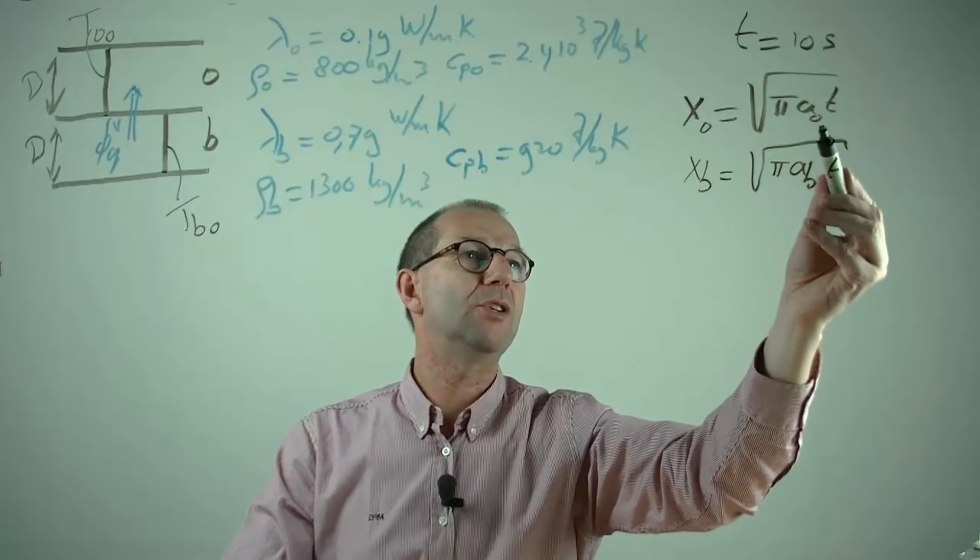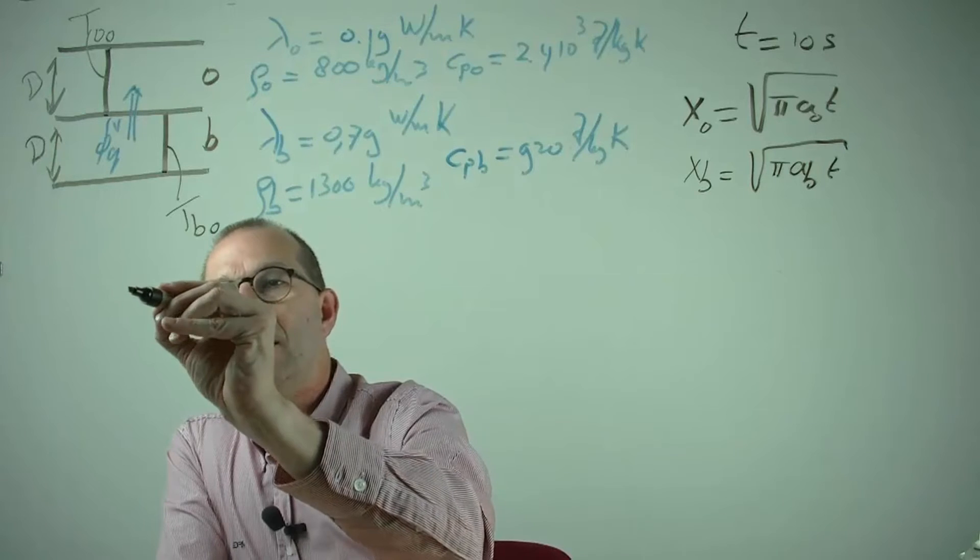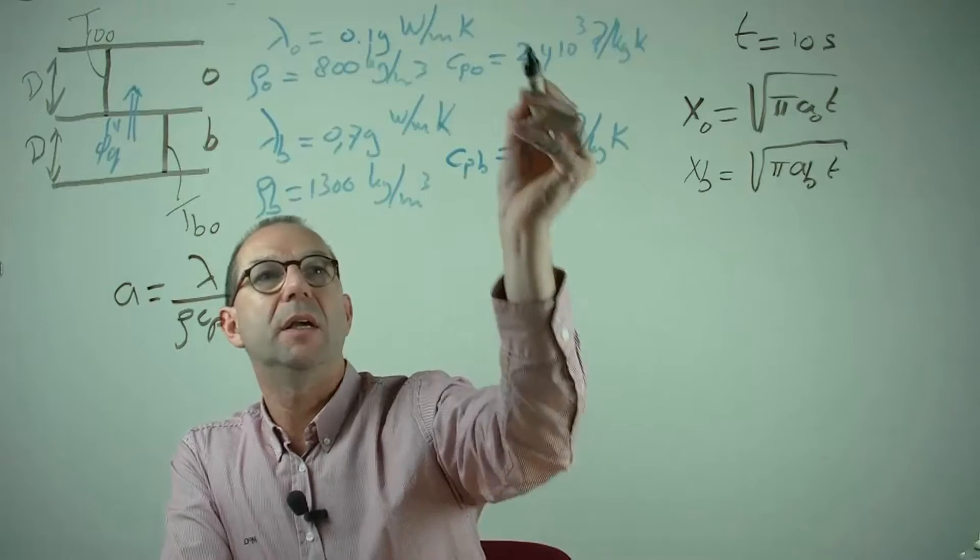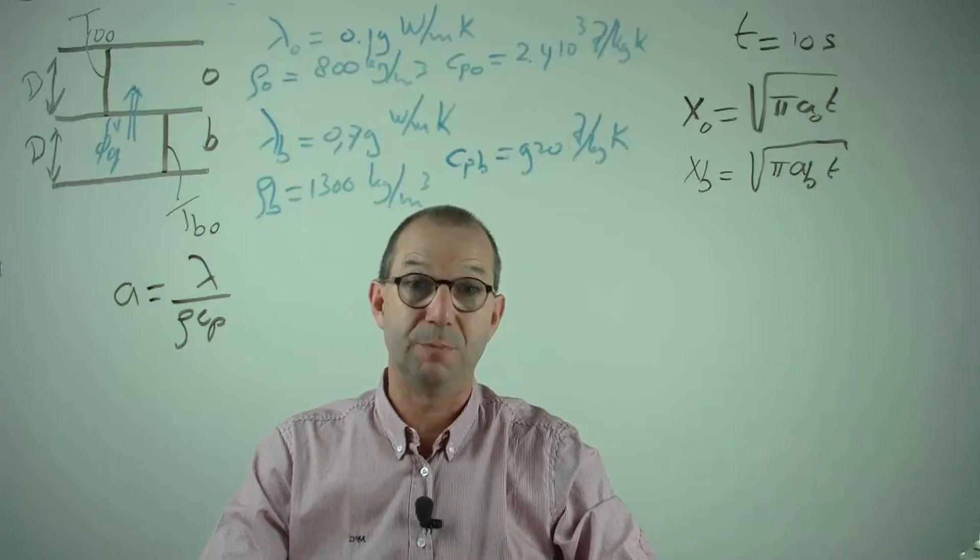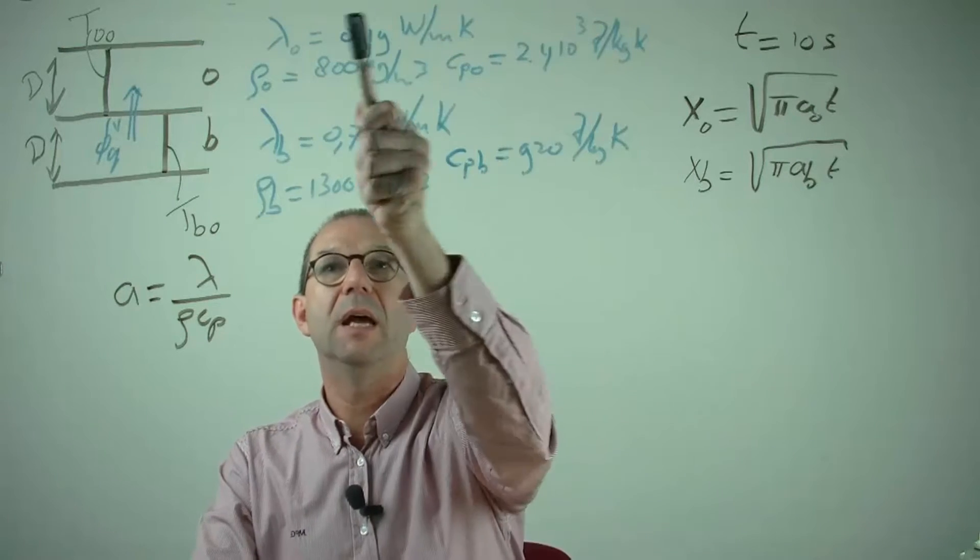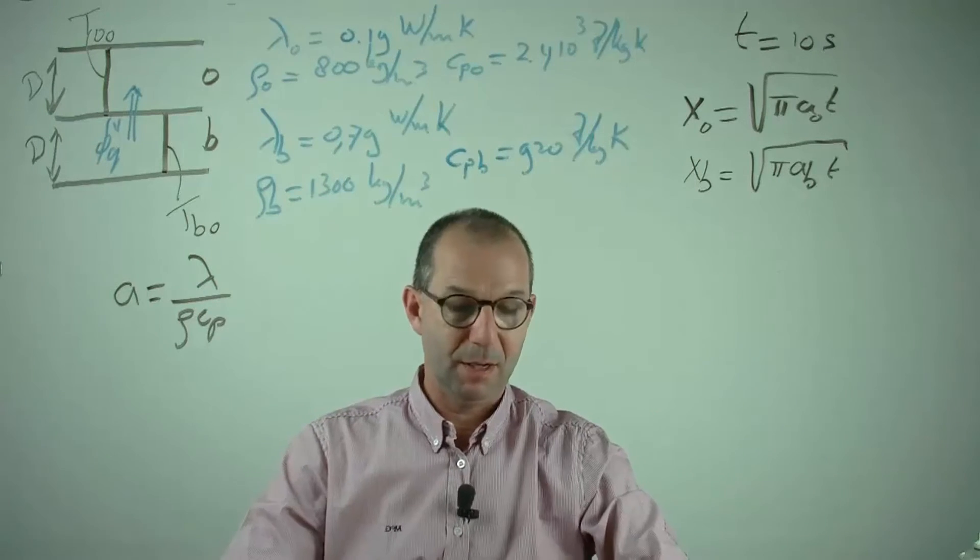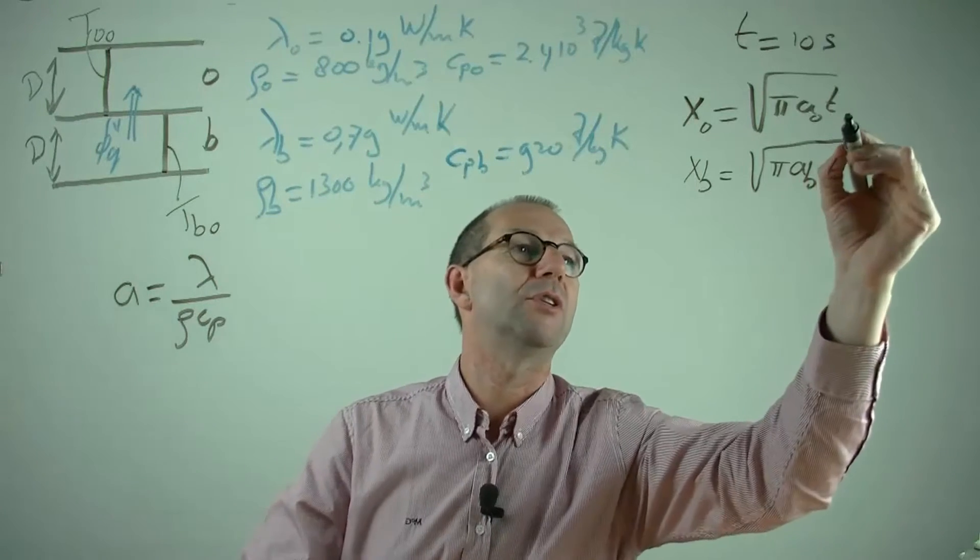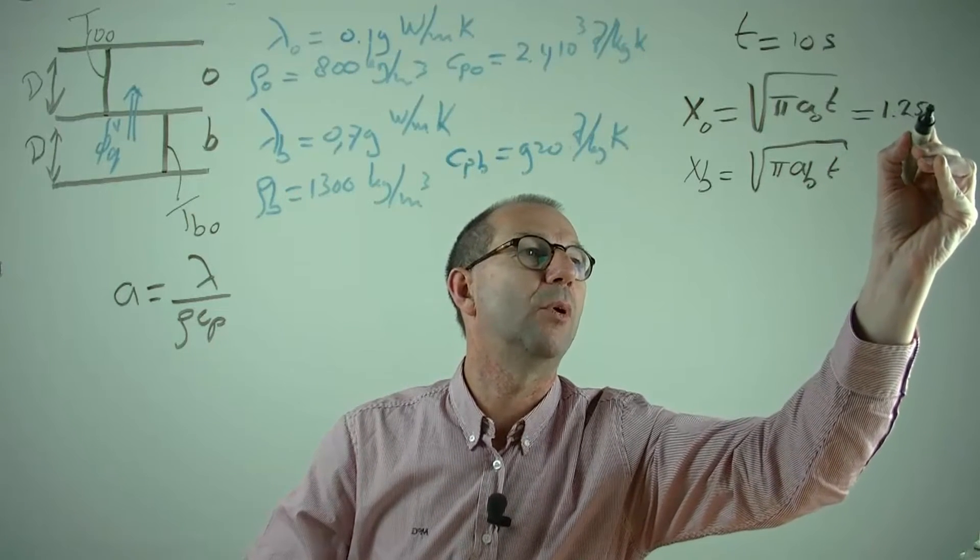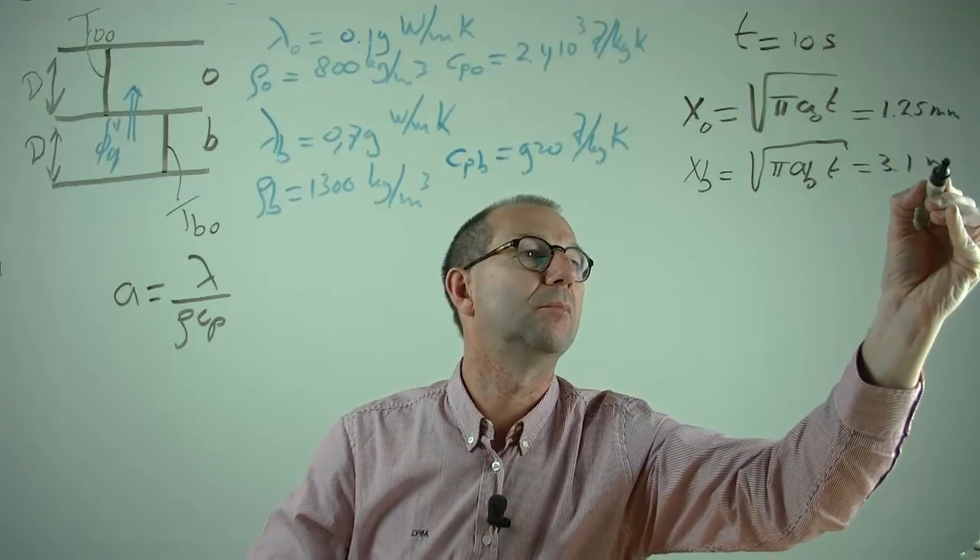I can compute this, because it's at 10 seconds, provided I know a. Well, I can compute the a, because by definition a is lambda over rho cp over material. Here in blue I listed for each of the materials the lambdas, the rho and cp. Bituminous here at the bottom and the oak at the top. So with these numbers I can back out the a and I can thus compute after 10 seconds that the penetration depth of oak is 1.25 mm and the bituminous material is 3.1 mm.